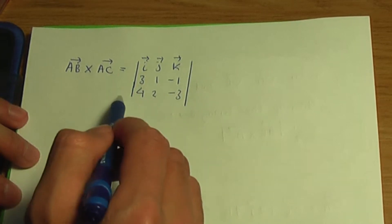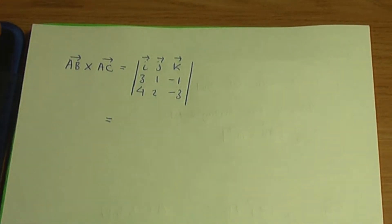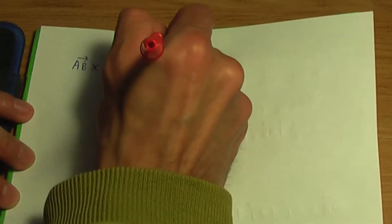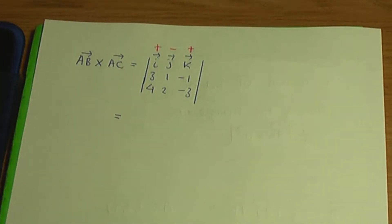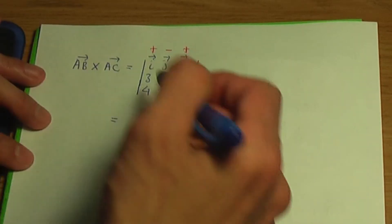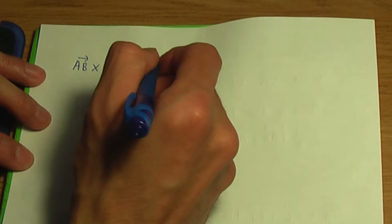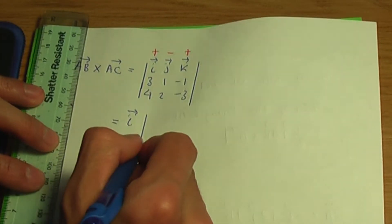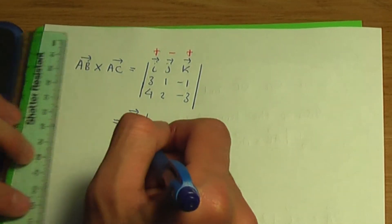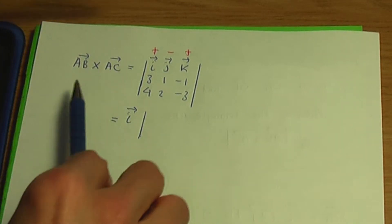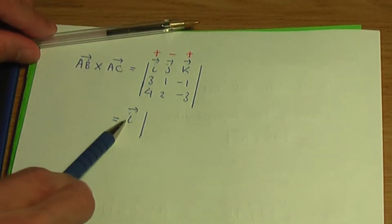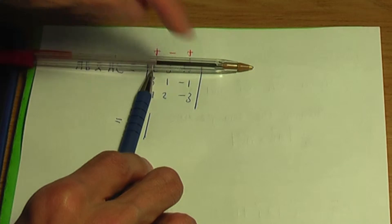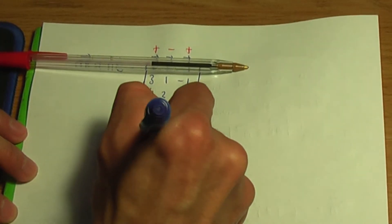You can expand this 3 by 3 determinant using any row or column. I expand using the first row, with associated signs plus, minus and plus. For the I component: plus I multiplied by the determinant of the 2 by 2 matrix found by ignoring the row and column associated with I, giving elements 1, minus 1, 2, minus 3.